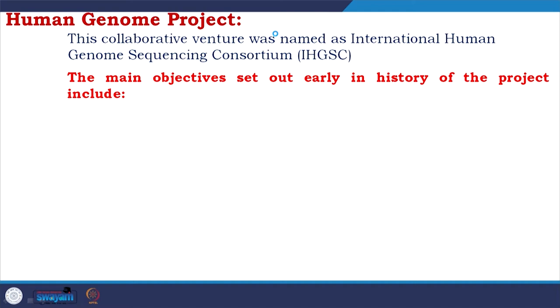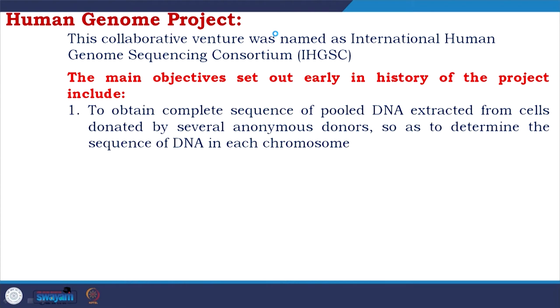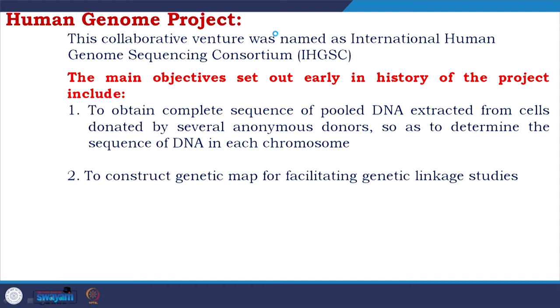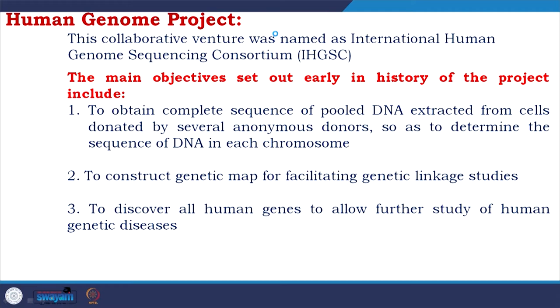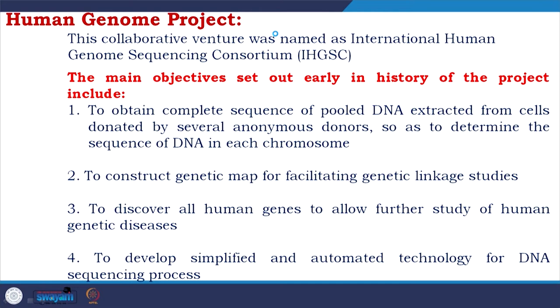This collaborative venture was named the International Human Genome Sequencing Consortium (IHGSC). Key objectives included: obtaining the complete DNA sequence from cells donated by anonymous donors; constructing a genetic map to facilitate genetic linkage studies; discovering all human genes for further study of genetic diseases; and developing simplified and automated technology for DNA sequencing. The consortium brought together major universities — MIT, Stanford, Caltech — along with companies like Illumina and Applied Biosystems, pushing toward more automation, higher throughput, and faster, easier sequencing.